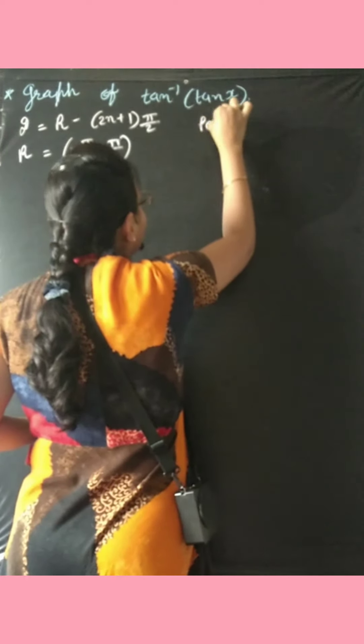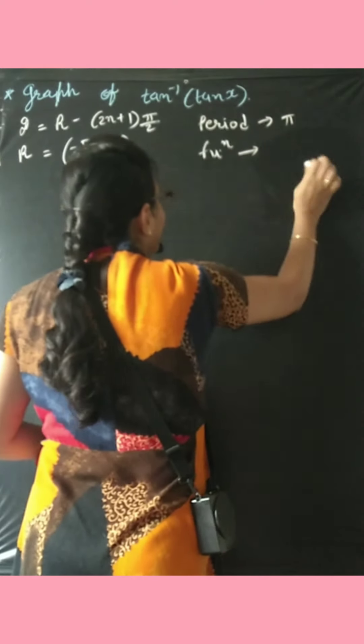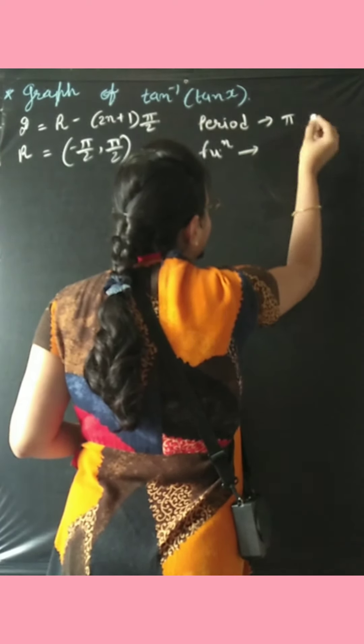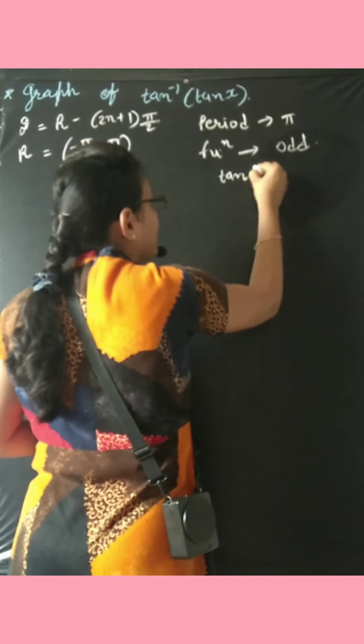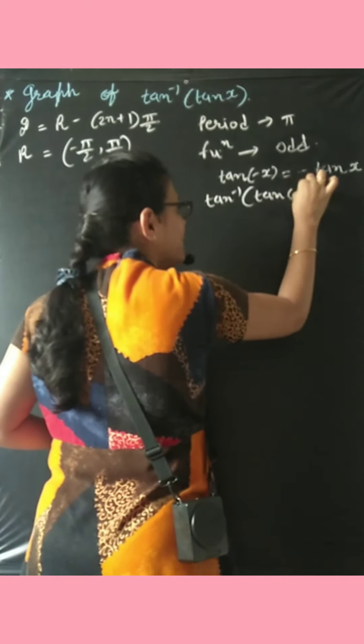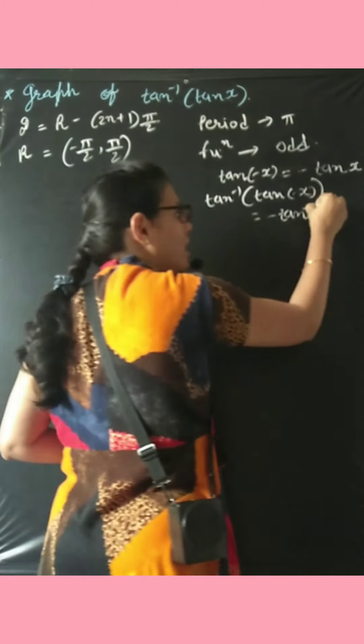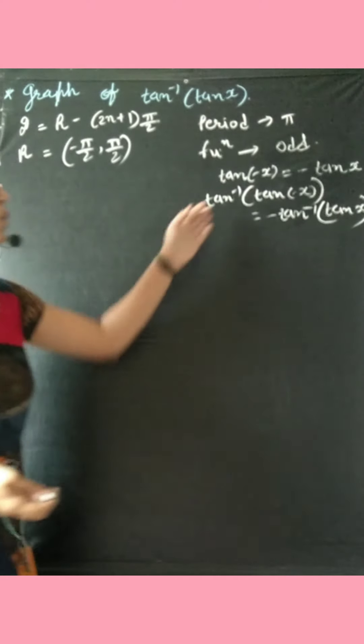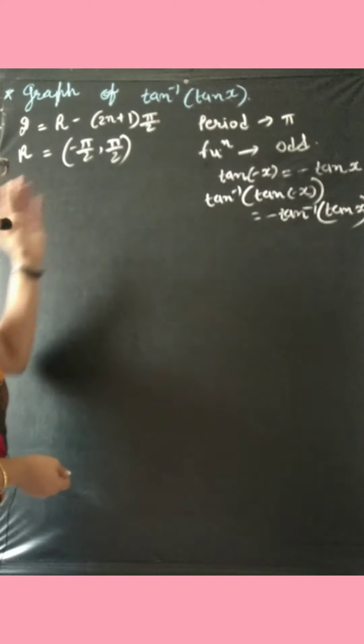Now we are talking about period of this function. We know very well period of tan theta is equal to pi. And the function's behavior: we clearly know that tan inverse is an odd function. How? Because suppose if I am putting minus x in tan, you can write minus tan of x. And suppose I have tan inverse of tan minus x, this is a property of inverse functions: if tan has minus, first the minus comes out, then the whole tan minus comes out. This you can clearly do from the property.